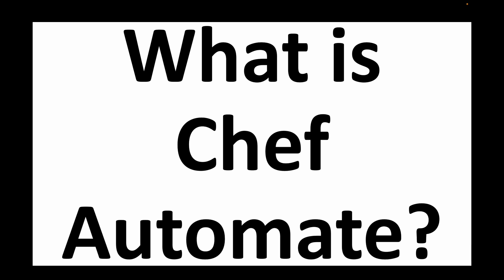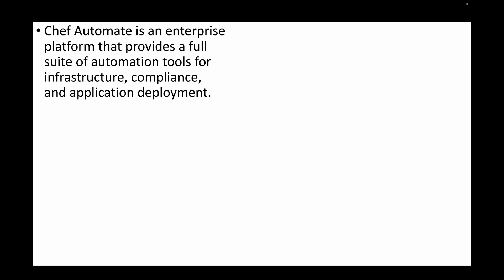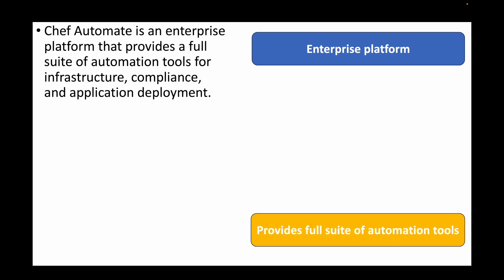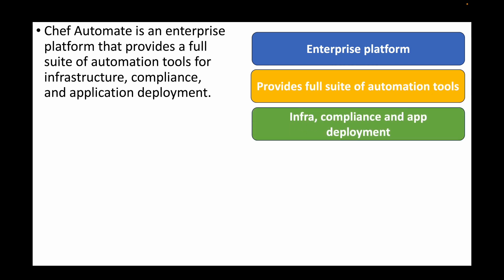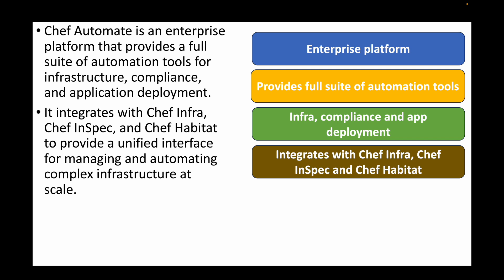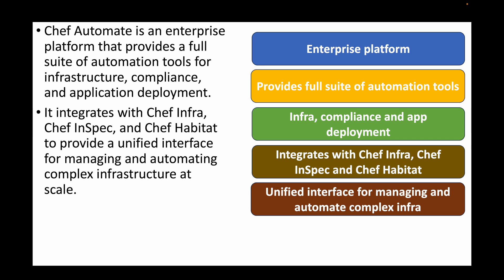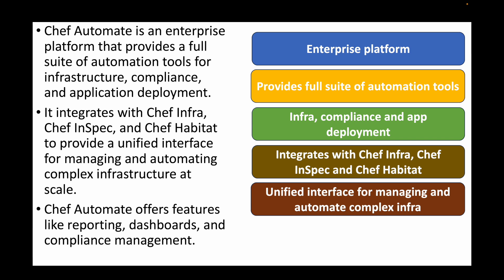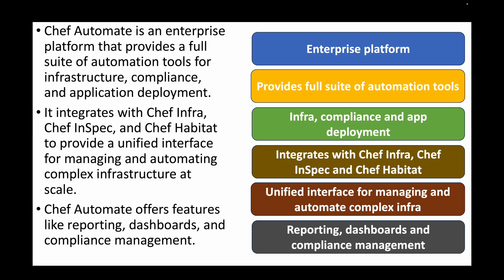The last question is: what is Chef Automate? Chef Automate is an enterprise platform providing a full suite of automation tools for infrastructure compliance and application deployment. It integrates with Chef Infra, Chef InSpec, and Chef Habitat, providing a unified interface for managing and automating complex infrastructure at scale. Chef Automate also offers additional features like reporting dashboards and compliance management — an enterprise tool for getting more out of Chef.